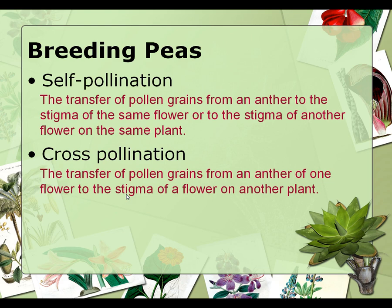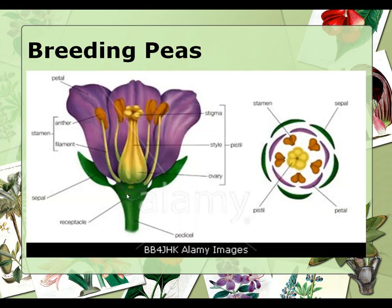Here's a graphic of the anthers and stigmas on the flowers. The stigma is here, and the stigma is sticky. The anthers, where the pollen is produced, are these brown, kind of upside-down slipper-looking things. The pollen is passed by butterflies, bees, and wind, and it gets on the stigma. The pollen travels down into the ovary, where the egg is located. Once the egg is fertilized by the pollen, a seed will result, and the ovary will turn into the fruit.